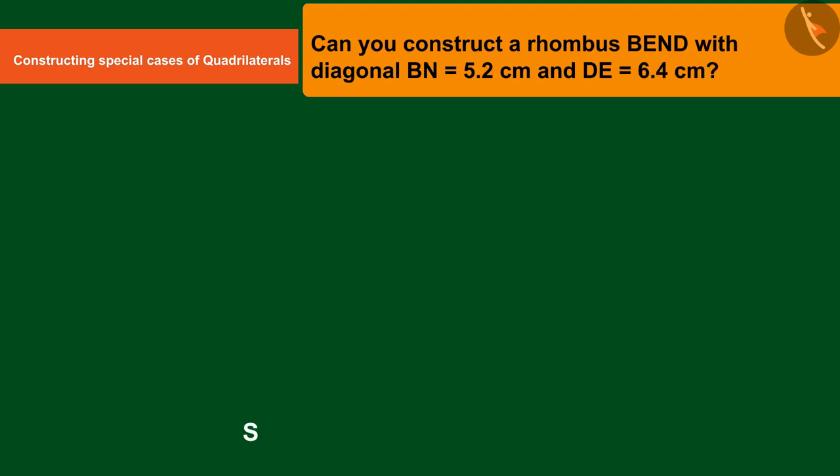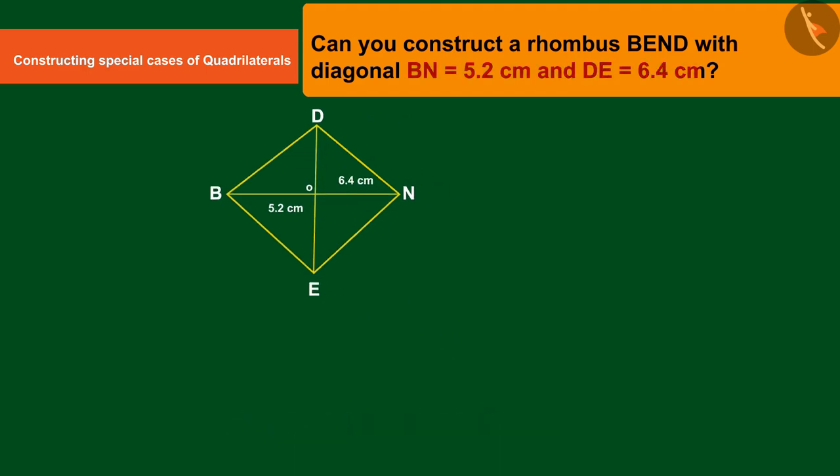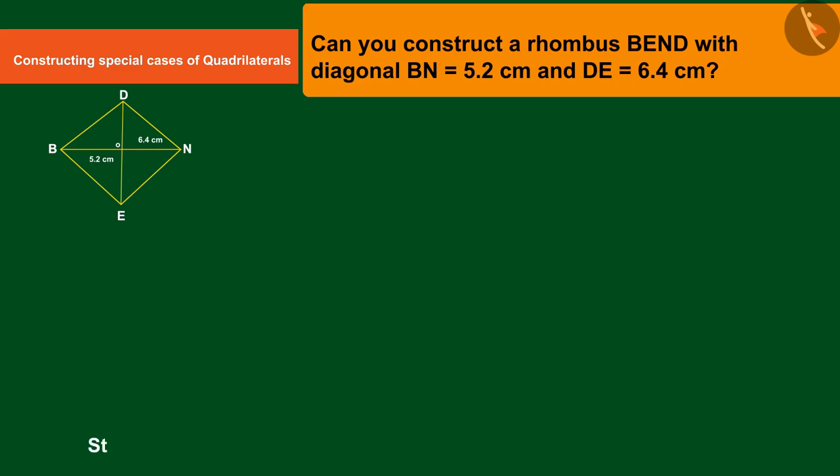Create a rough shape. So let's first construct a rough shape in which BN equals 5.2 centimeters and DE equals 6.4 centimeters.